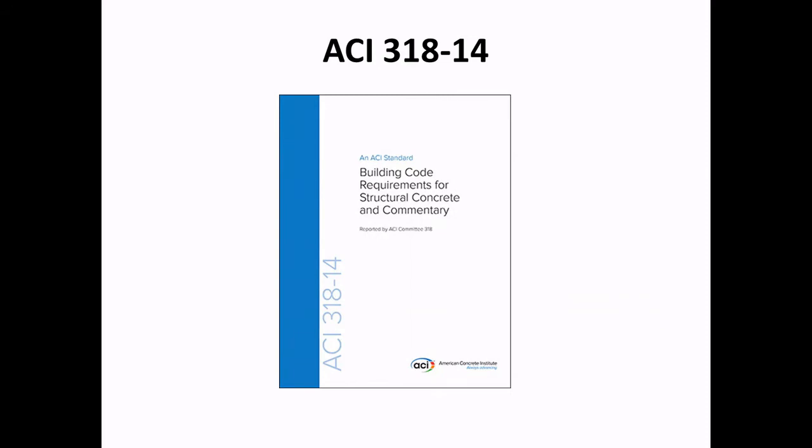ACI 318 contains plenty of quantitative and qualitative information — equations and charts, but also information about the properties of concrete. The newest version as of this video is the 2014 edition, which has the standards and the explanations for the standards printed side by side. Tab all the chapters, highlight all the charts and equations, and make sure you know how to use them.